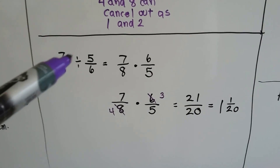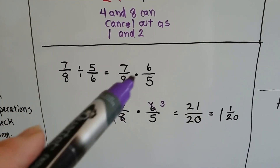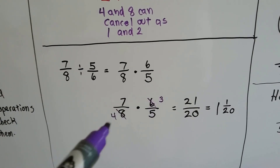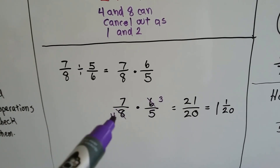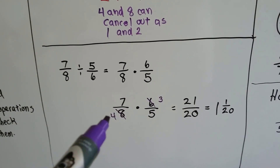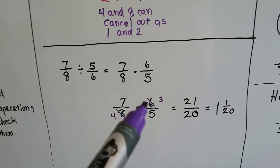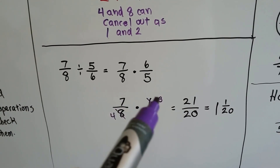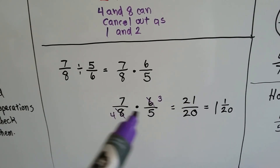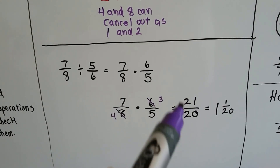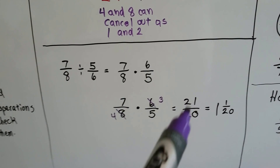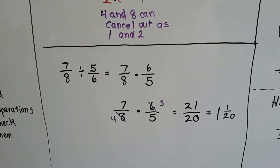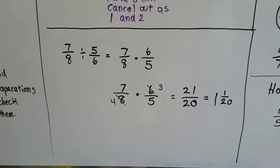7 eighths divided by 5 sixths turns out to be 7 eighths times 6 over 5 — we flipped it. The 8 and the 6 can cancel out as 3 and 4: there are three 2s here and four 2s here. Now we multiply across to get 21 over 20. When we reduce that to its lowest terms, there's a 20 twentieths hiding in here, which is the 1, and there's one twentieth left over. So you have 1 and 1 twentieth.